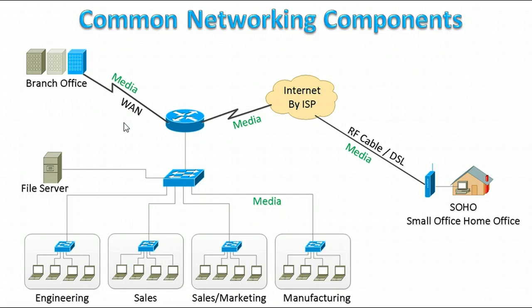The WAN link here is used to connect to the branch office. This WAN link could be a leased line, circuit switched, or packet switched. We can cover WAN in more detail in upcoming videos.